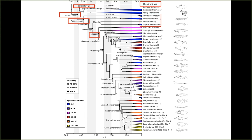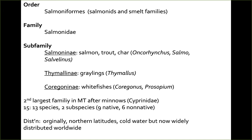Moving on to Teleostei, today we'll be going over Esociformes, which are pikes, and Salmoniformes, which are the Salmonid family and smelt.